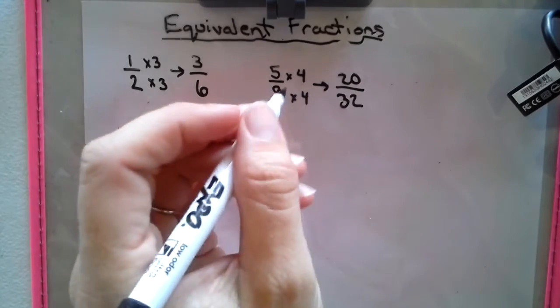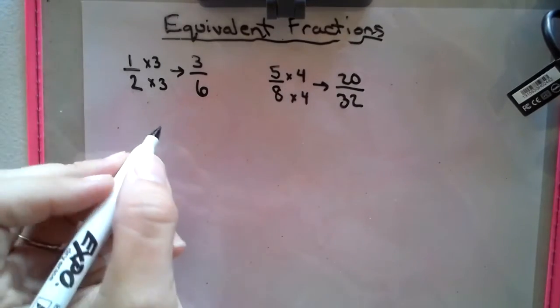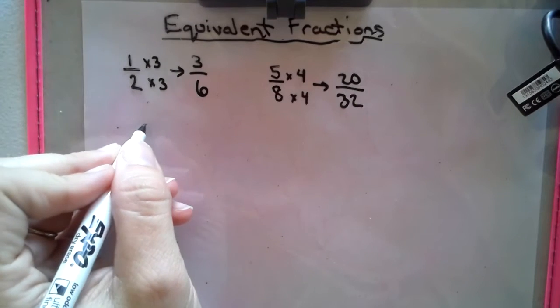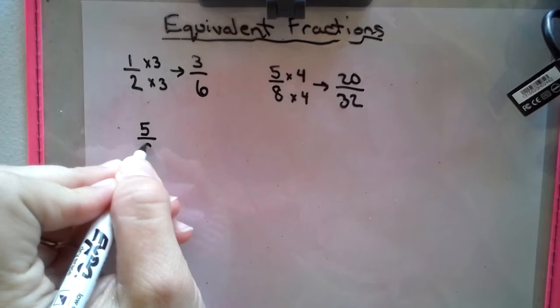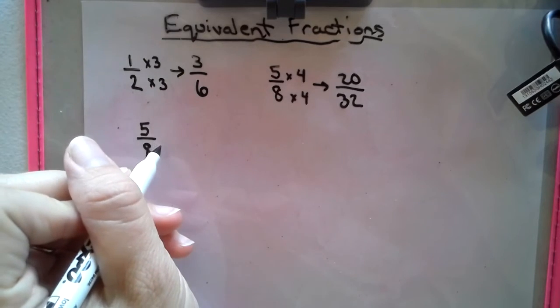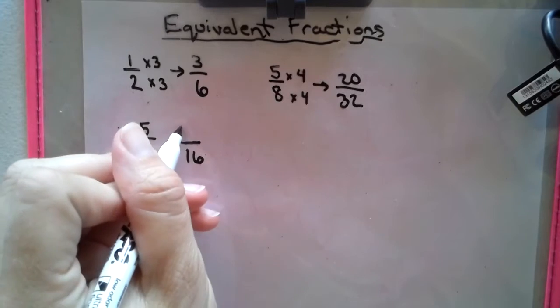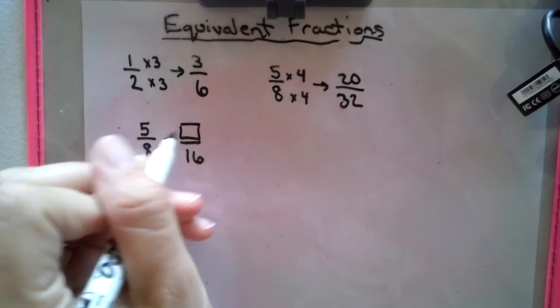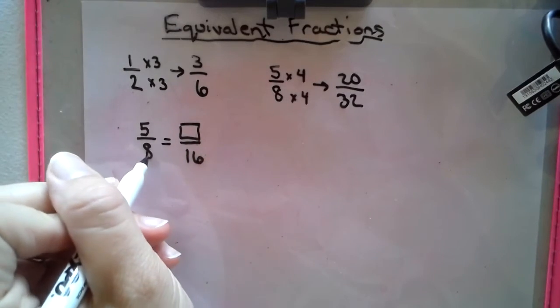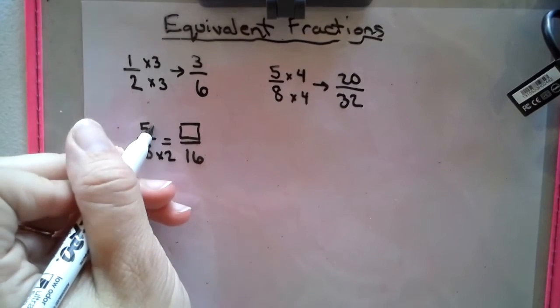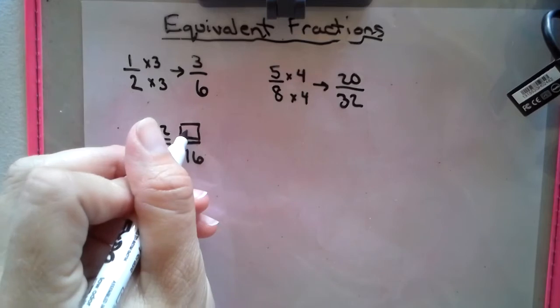Now we can also find an equivalent fraction by filling in a missing piece, almost like the look of a proportion. So let's say we have 5/8 and we have to figure out the missing piece that goes into this box. We could say, how do we get from that 8 to that 16? So we see that it's multiplying by 2, so we do that to the numerator and we get our 10.